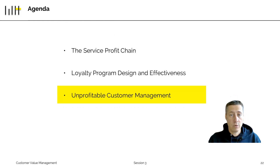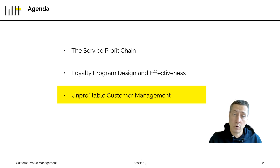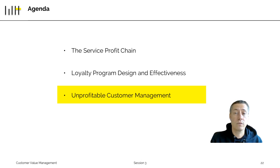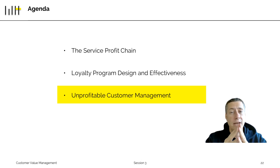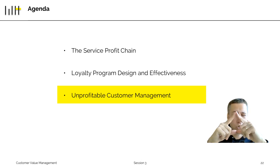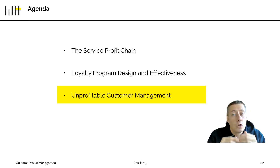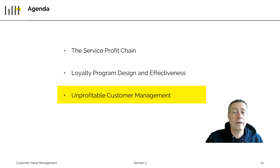So to finish this part on loyalty programs: as we have seen, loyalty programs very often focus on the top of the pyramid, trying to identify how valuable customers are and treating those top-of-the-pyramid customers very well. We will now move to the opposite end — unprofitable customers — and how those should be managed.